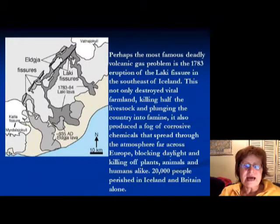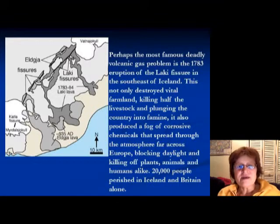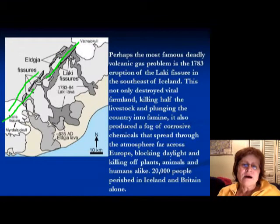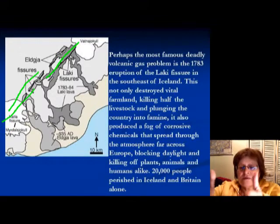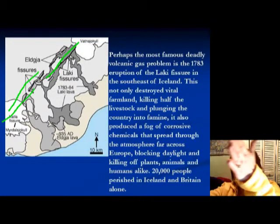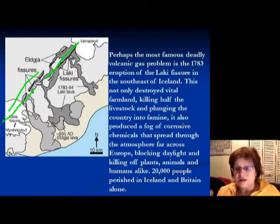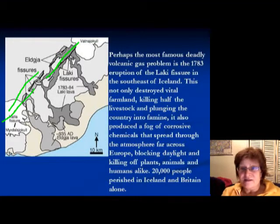A very famous example of these problems is the Laki eruption, which happened in 1783. It was a fissure volcano, meaning it's a long chain of volcanoes where lava comes through a crack in the earth. It looks like a firework — really beautiful, but very destructive.